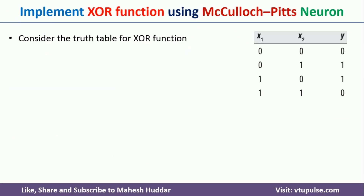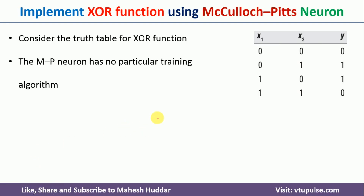This is the truth table for the XOR logic function. X1 and X2 are the inputs, and Y is the output. The output is high only when any one of the inputs is high — that is, either X1 should be high or X2 should be high. The MP Neuron must fire the output only when X1 is 0 and X2 is 1, or X1 is 1 and X2 is 0.